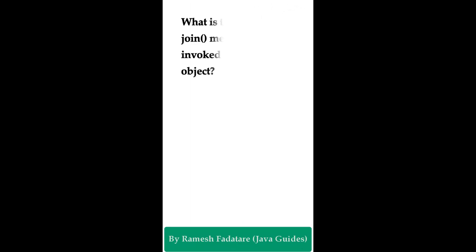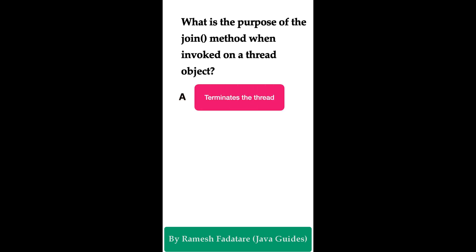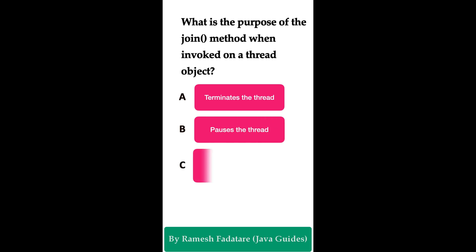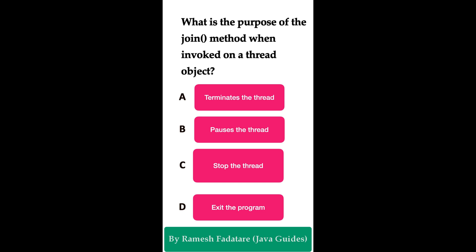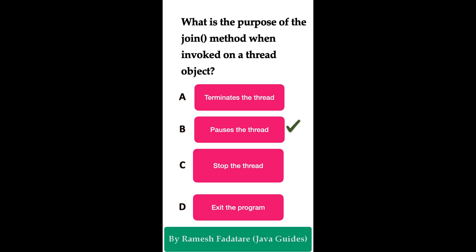Welcome to Java Quiz Series. Here is one more question: what is the purpose of the join() method when called on a Thread object? Option A: it terminates the thread. Option B: it forces the thread. Option C: it stops the thread. Option D: it exits the program. You have five seconds to answer this question. The correct answer is Option B: it forces the thread.